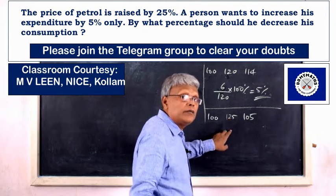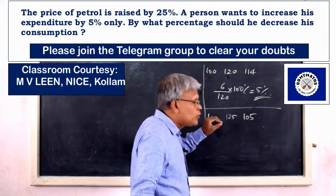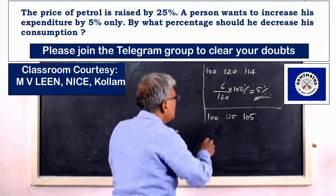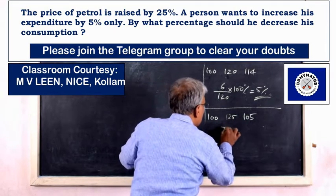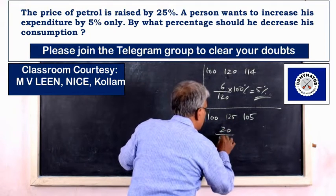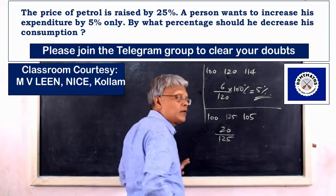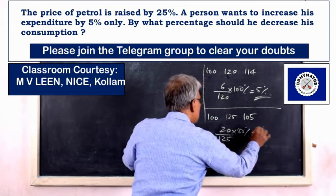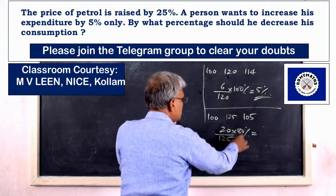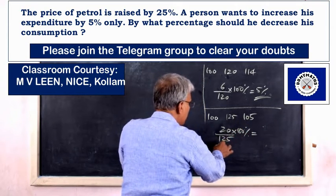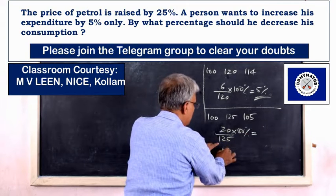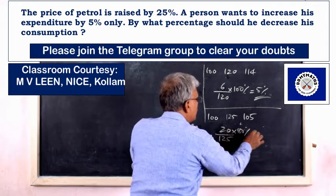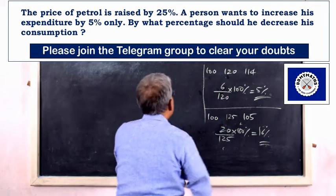We work with 100 and 125. If we express it as a fraction, 105 over 125, which equals 100 divided by 125. Simplify: 100 and 25 — divide both by 25. That gives 4 over 5, then multiply by 5. 5 equals 4. The answer is 16%.